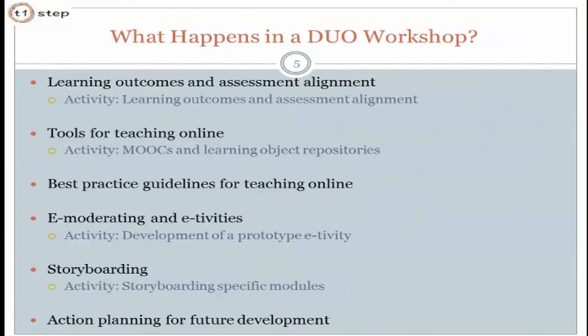We get people to list their learning outcomes, their assessments, and their activities, and to critically look at whether or not they are aligned. Because it's not right to say you have certain outcomes for a module if you're going to assess 100% by quiz or multiple choice, and you're not assessing evaluation or analysis outcomes. A lot of people end up revamping their learning outcomes and also revamping their assignments in light of that. Most people in third level don't have a teaching qualification, so they never really had time to consider those kinds of things.